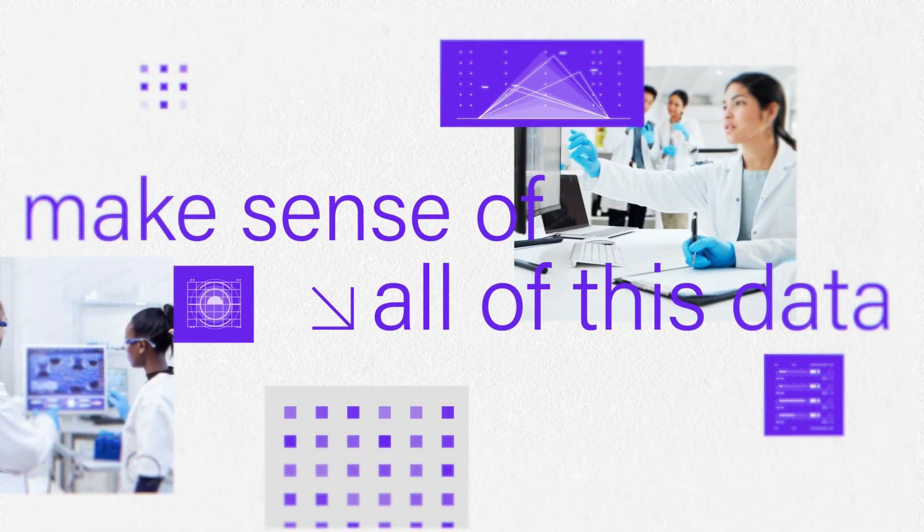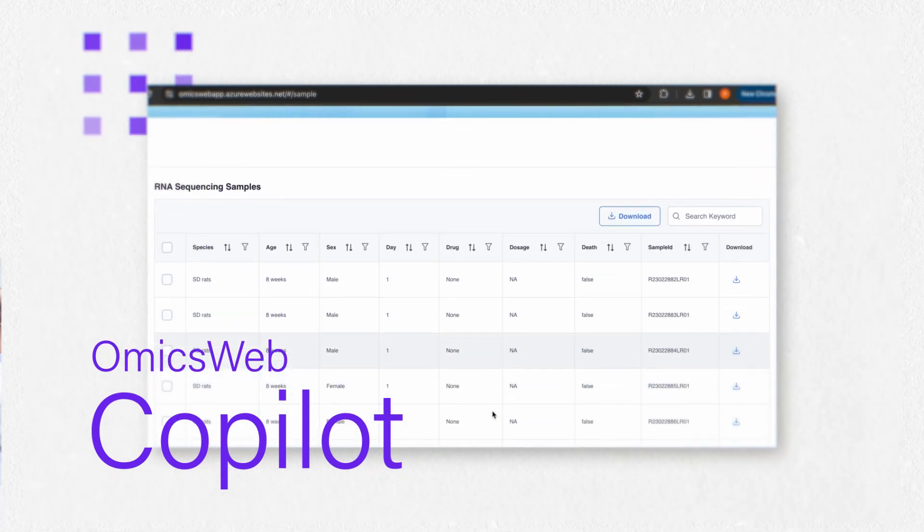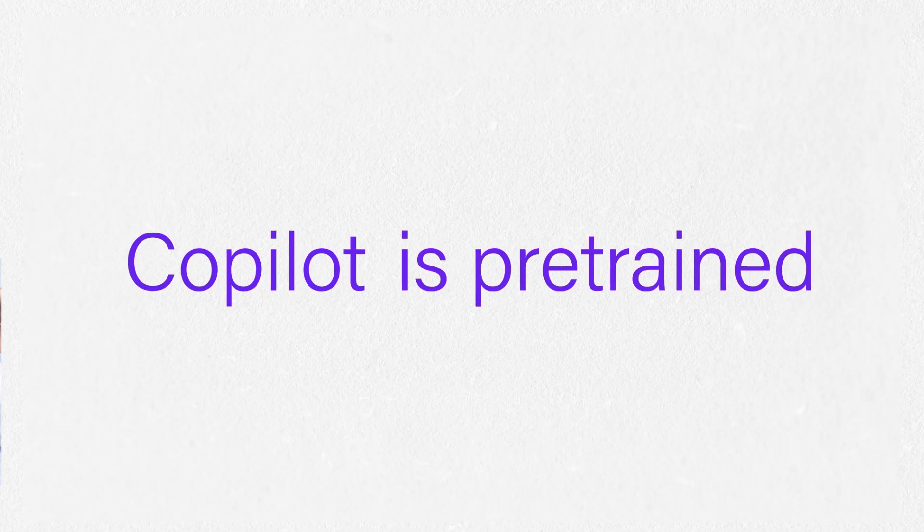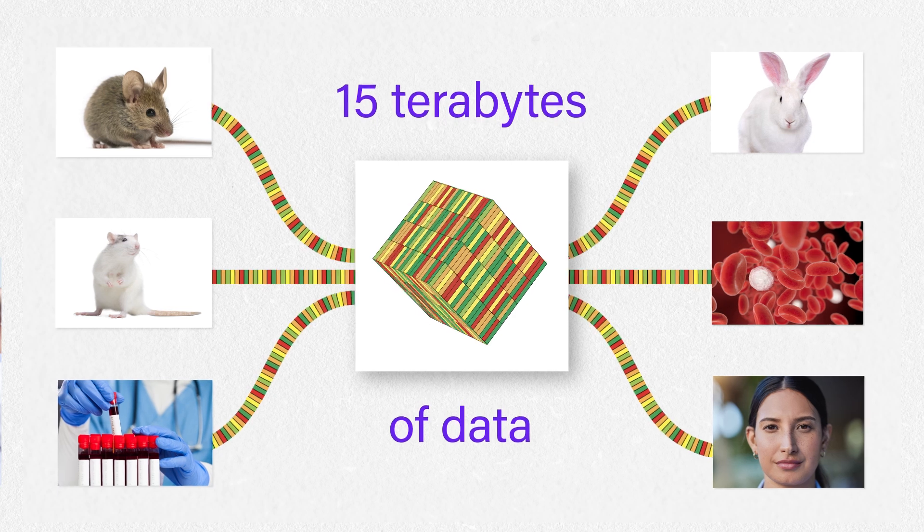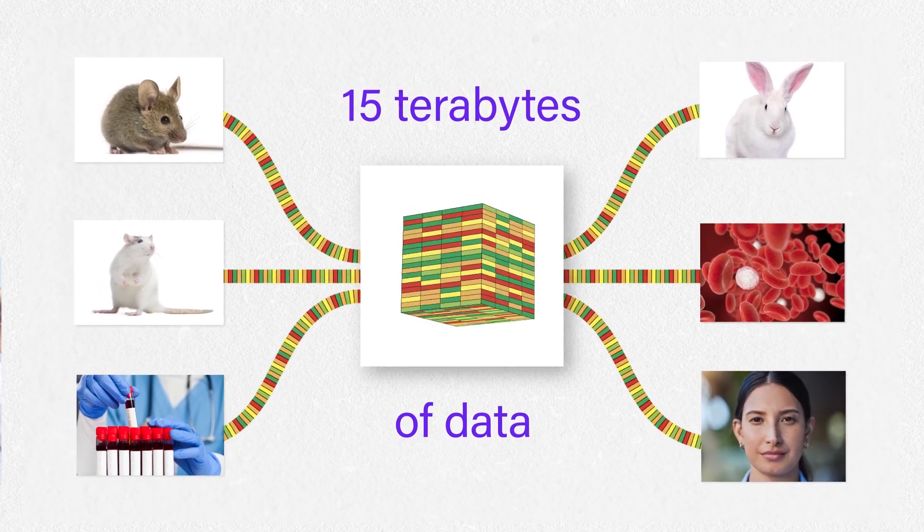To help you make sense of all this data, we have constructed OmicsWeb Copilot, a conversational AI that specializes in processing RNA-seq data. Copilot is pre-trained on over 5,000 proprietary RNA-seq data sets, with over 15 terabytes of data, so it really knows RNA-seq.